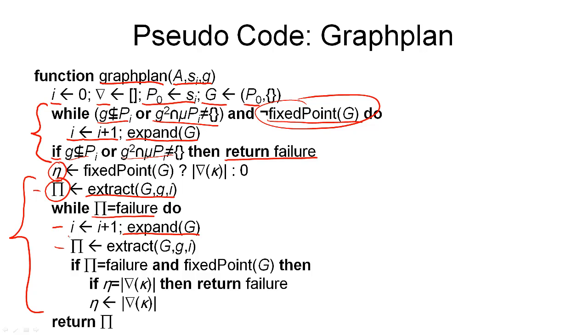then one option is to expand the planning graph with another set of layers. And then again, we try to extract a plan from this planning graph that now contains an additional action and proposition layer. And again, we store this in our variable big pi. Now, if the returned value is an action plan, that means we have one.